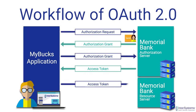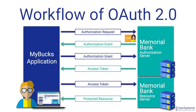MyBucks sends the request to the Memorial Bank resource server with this access token included, and Memorial Bank identifies that this token is valid to access those particular pieces of Sarah's account. The resource server sends the protected resources back to MyBucks, and the application now has Sarah's balances and transaction history to display in dashboards and metrics for Sarah.